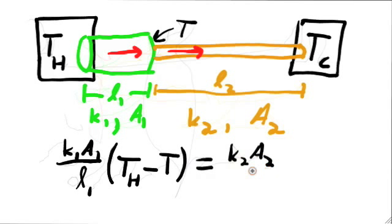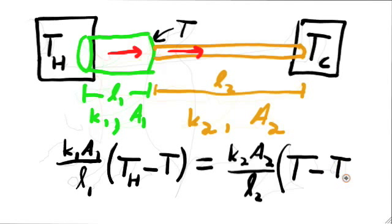First, we'll consider two rods which are exactly the same except for their length. And second, we'll consider two rods which are exactly the same except for the materials they're made out of. That is, they'll have different thermal conductivities.